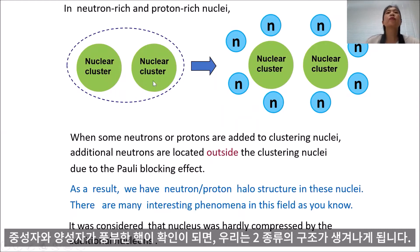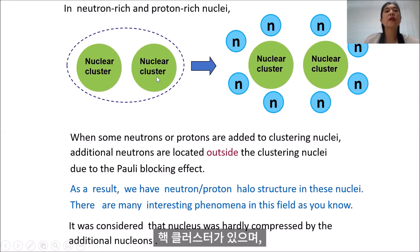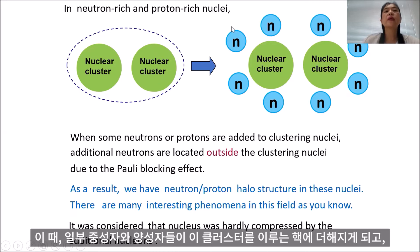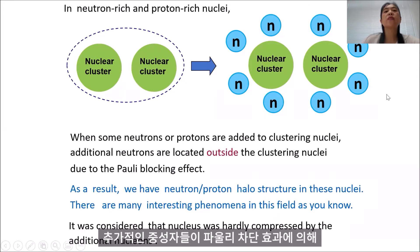In the neutron-rich region, the proton-rich nuclei — once we assume the nucleus as a kind of cluster, a nuclear cluster, then when some neutrons or protons are added to this cluster nuclei, the additional neutrons are located outside the clustering nuclei.